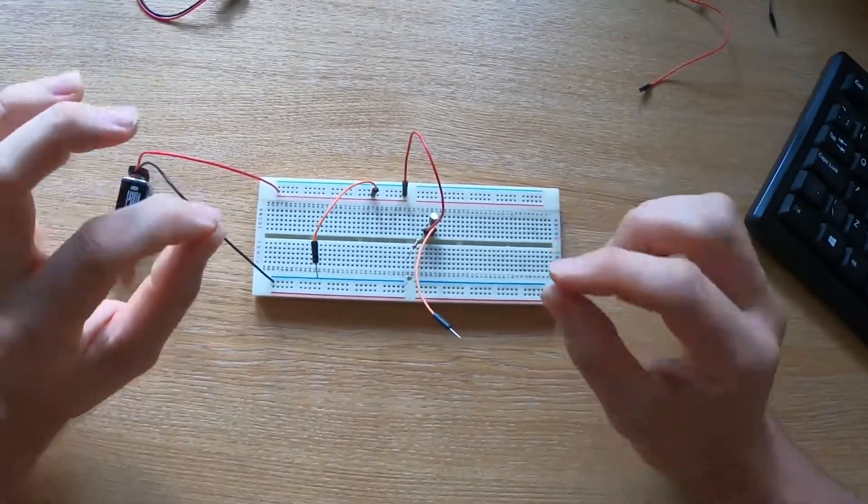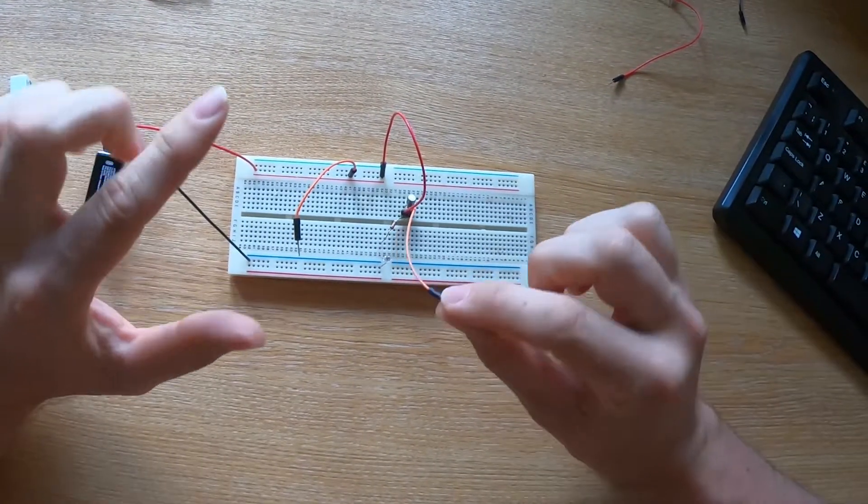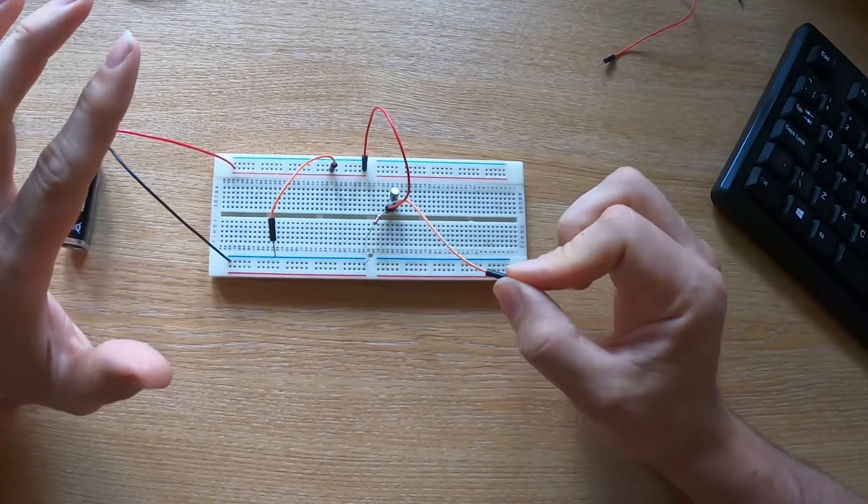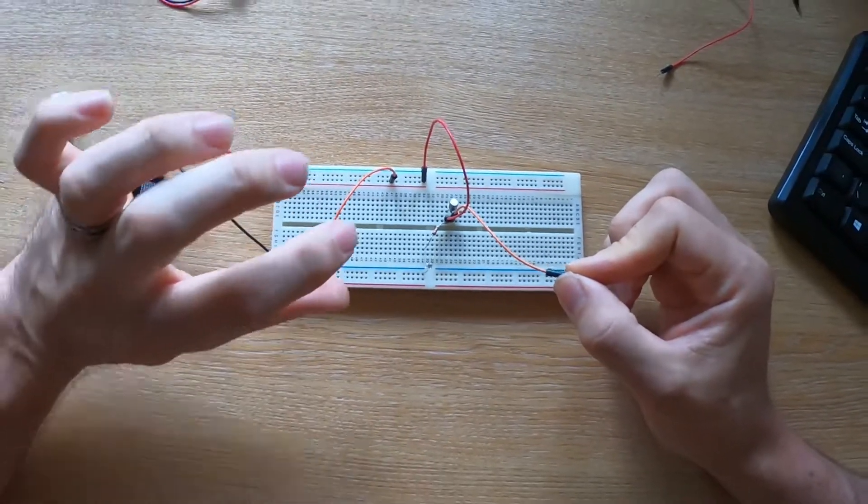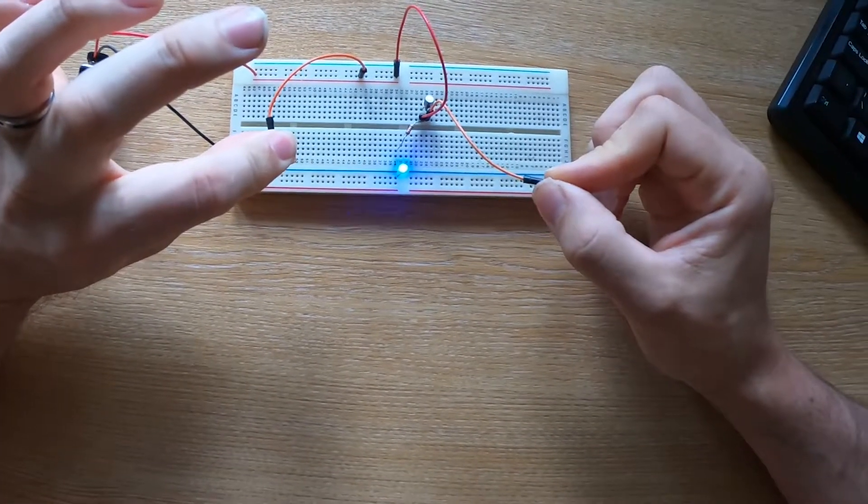Now just to prove how small the current is that you need to turn on the transistor from the base, what I'm going to do is grab hold of this wire which is going into the base of the transistor with one hand, and I'm going to grab the other wire with my other hand.